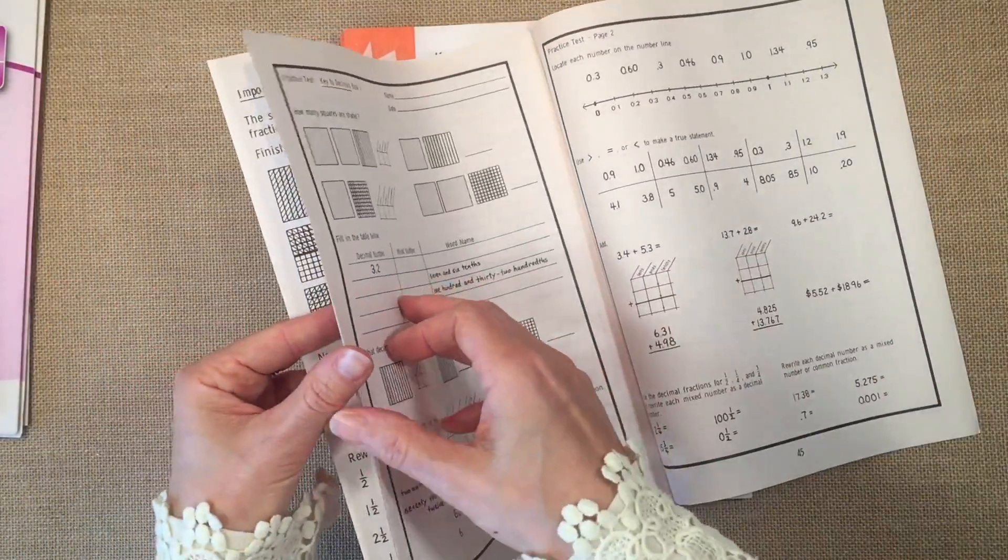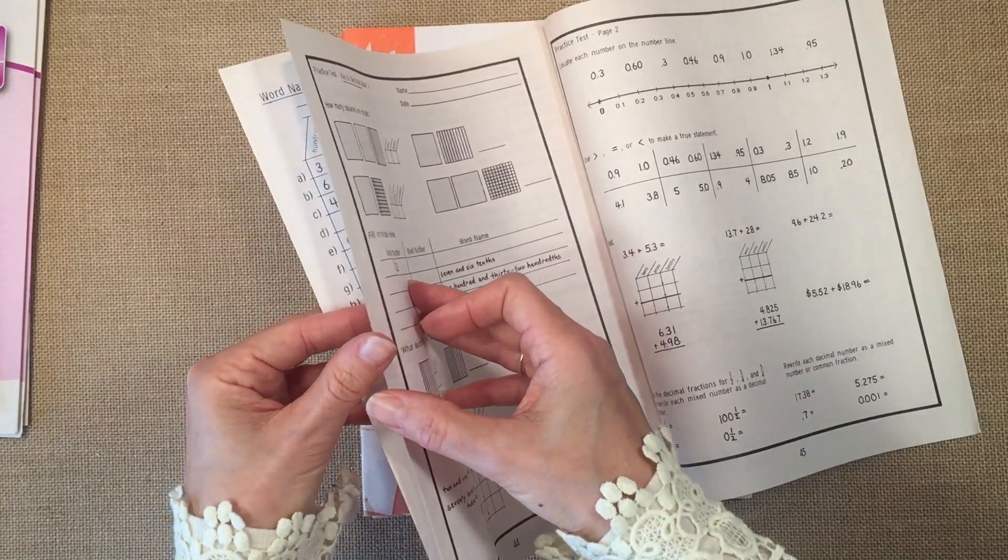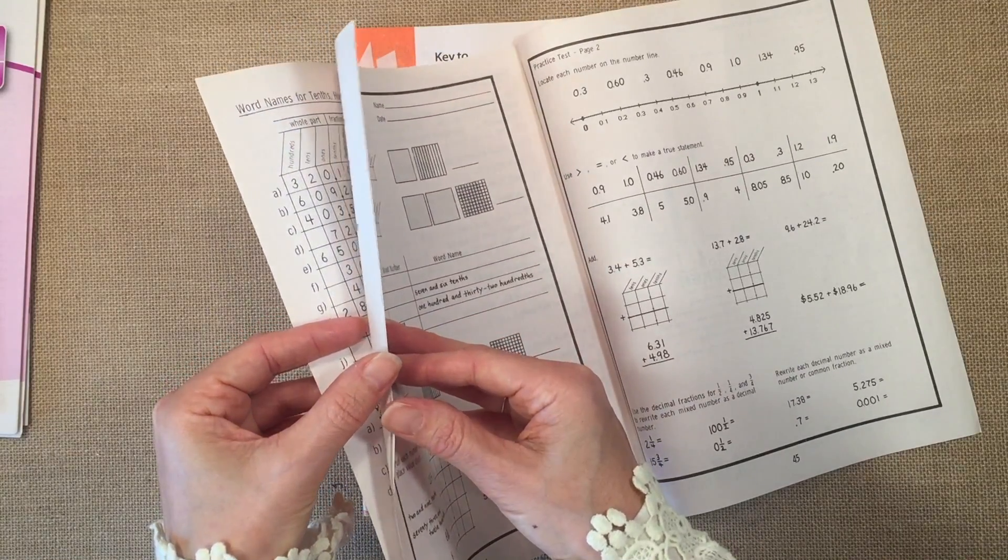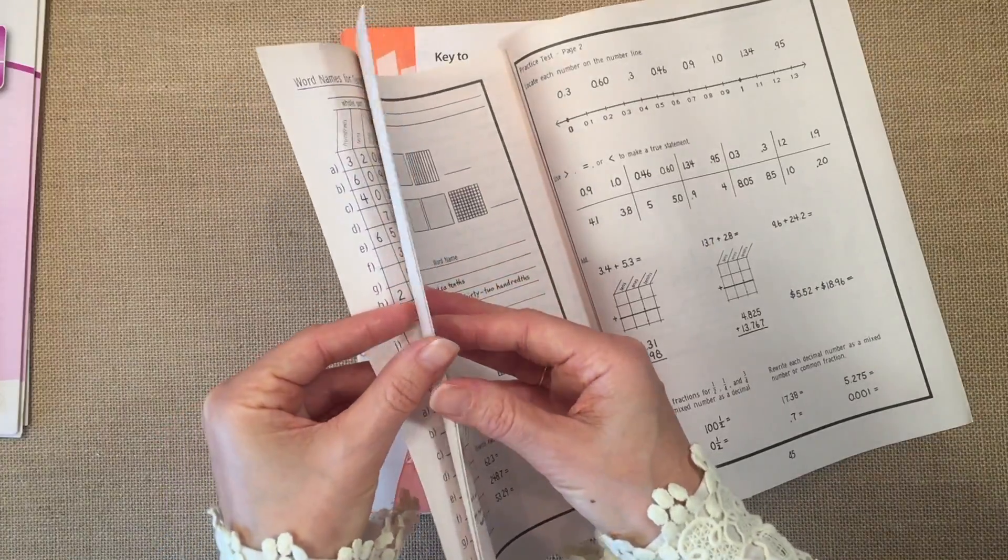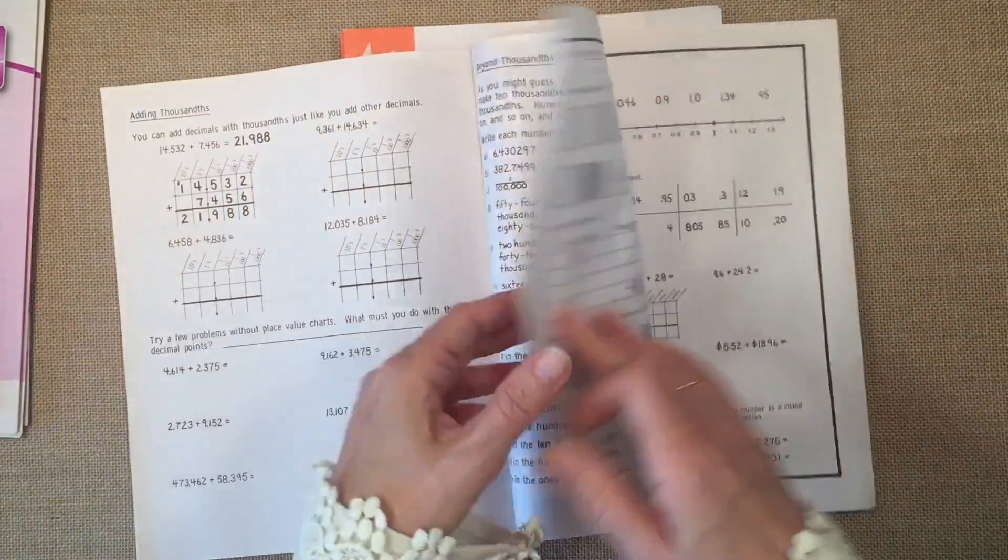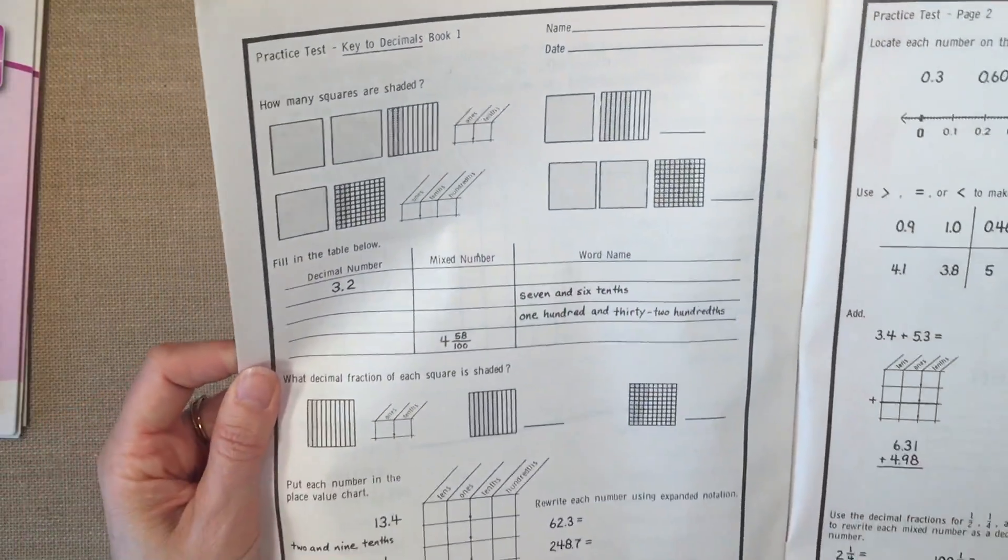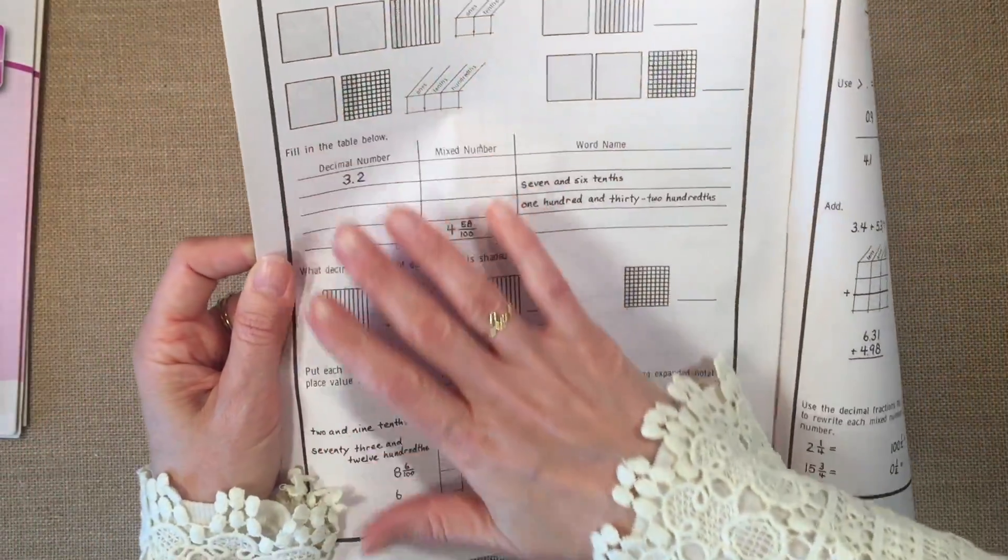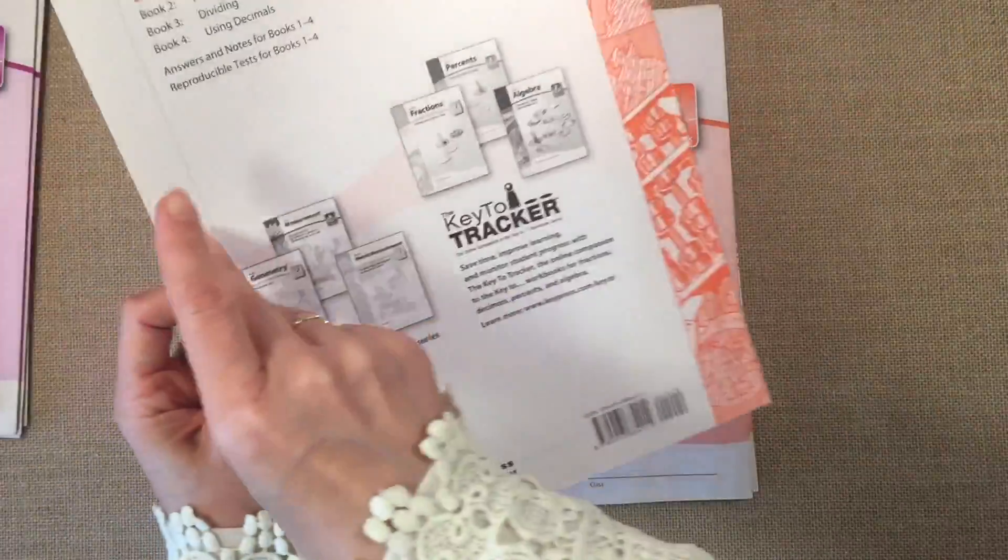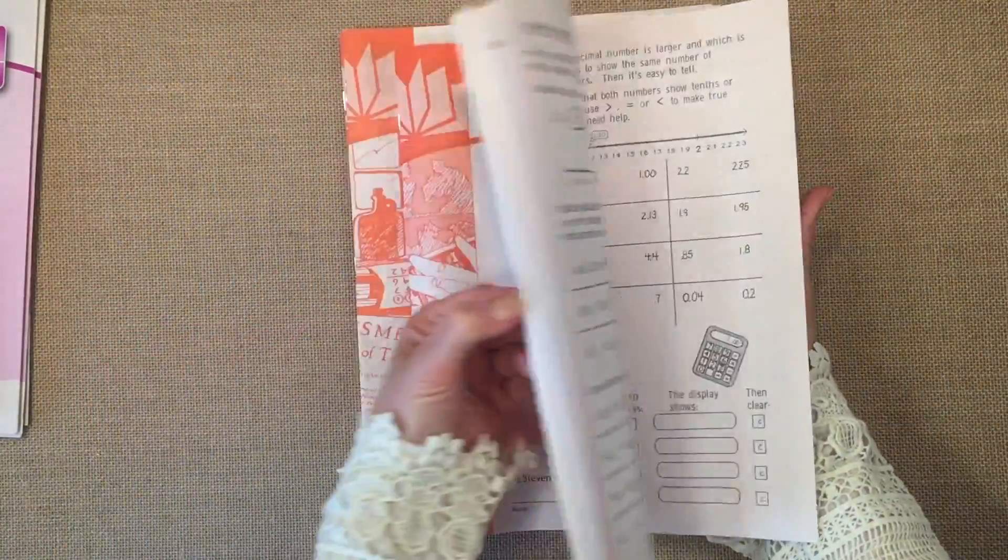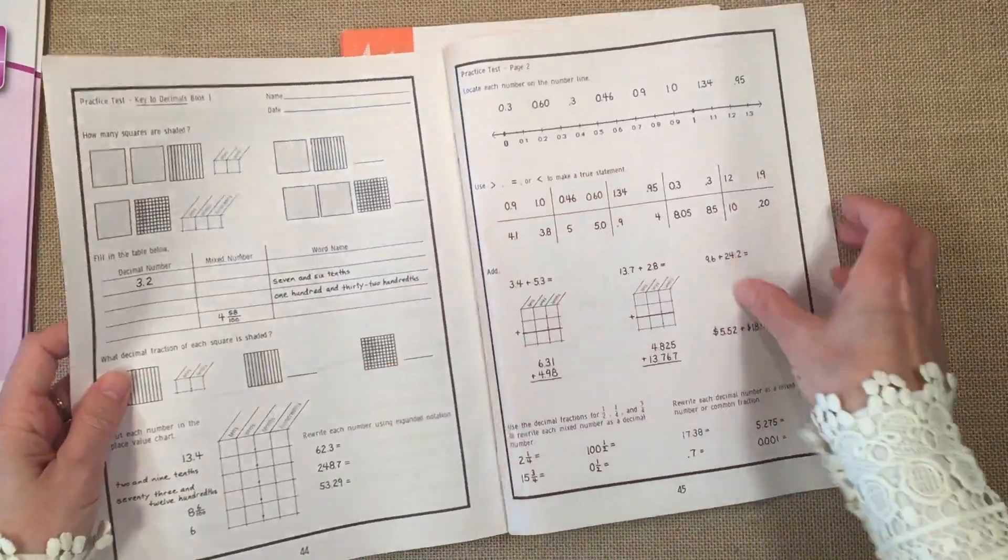At the end of the workbook, you have a couple pages as a practice test. And this does review all of... It has a little practice test and it kind of goes through all the things that you learned in the book. There aren't any other quizzes or tests throughout the workbook. There is only this one at the very end.